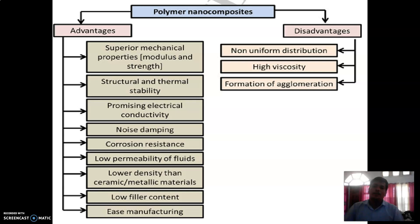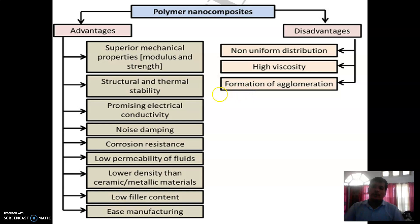Now about the disadvantages of polymer nanocomposites. The disadvantages of polymer nanocomposites are: they have non-uniform distribution, they have high viscosity, and formation of agglomeration also takes place in polymer nanocomposites.